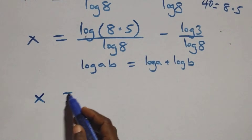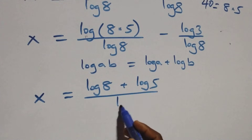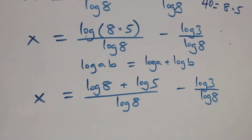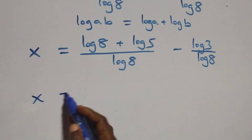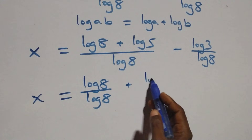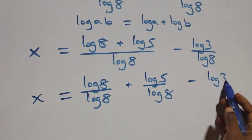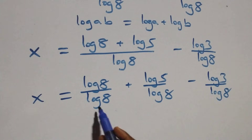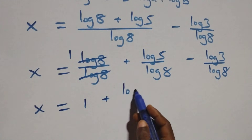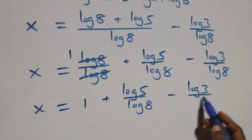We separate into individual fractions: x equals log(8)/log(8) plus log(5)/log(8) minus log(3)/log(8). Since log(8)/log(8) equals 1, this simplifies to x equals 1 plus log(5)/log(8) minus log(3)/log(8).